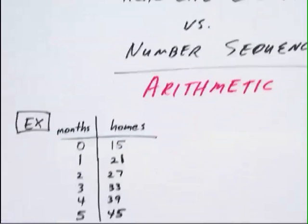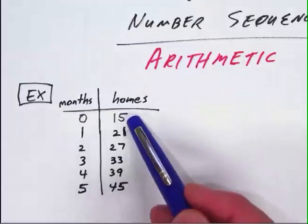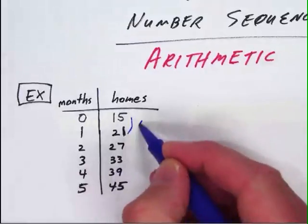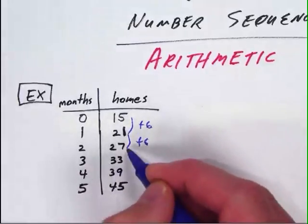Let's say that we have this data table with the context that there is a new construction builder developing homes in the neighborhood, and they open with a grand opening of 15 houses that they release for sale. Then each month, they're able to sell or build six new homes. So you'll see the growth here is clearly by adding six each month, or plus six, plus six all the way down.